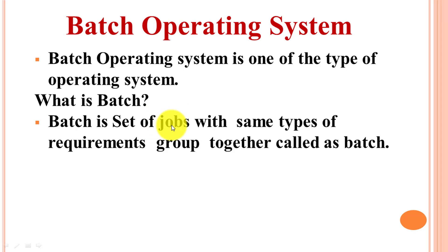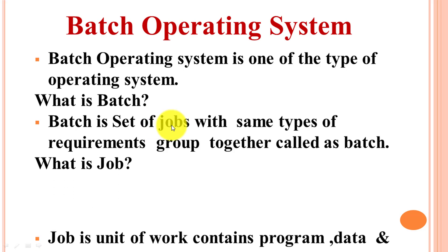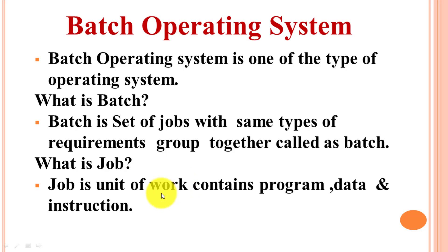What is meant by job? Job is a unit of work which contains program, data, and instructions. Job is a unit of work which contains an application program, input data, and instructions which control the application program.